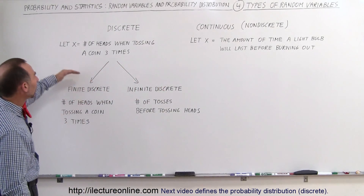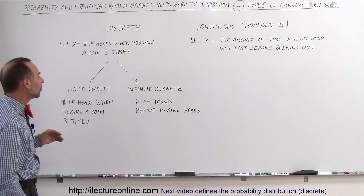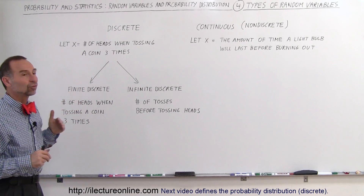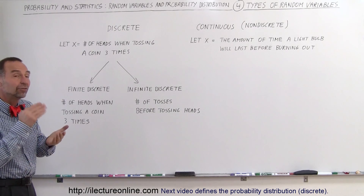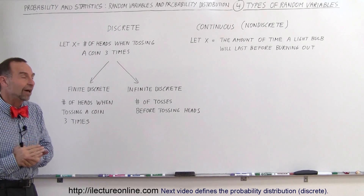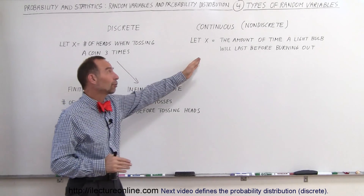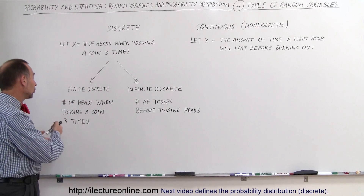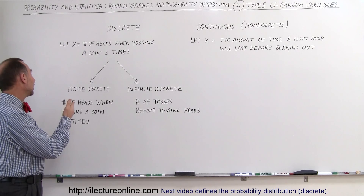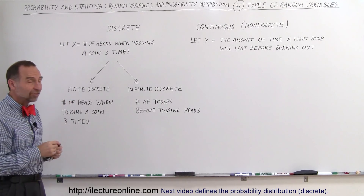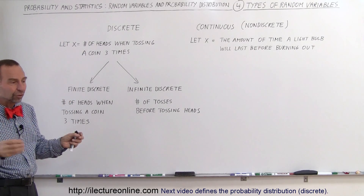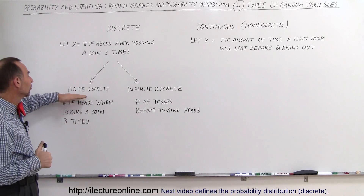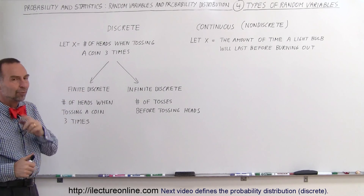When we come back to discrete random variables, there are really two different kinds. In one kind, we have a finite discrete, meaning there's just a finite number of discrete values. For example, when we toss a coin three times, the number of heads is either 0, 1, 2, or 3 — so there's a finite number of discrete values, making it a finite discrete type of random variable.